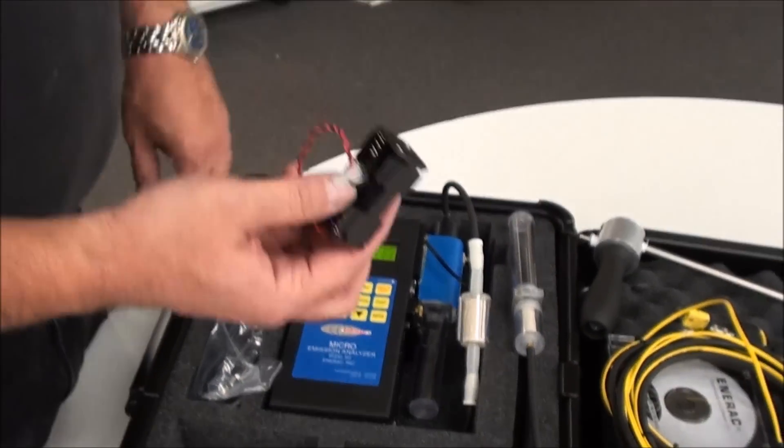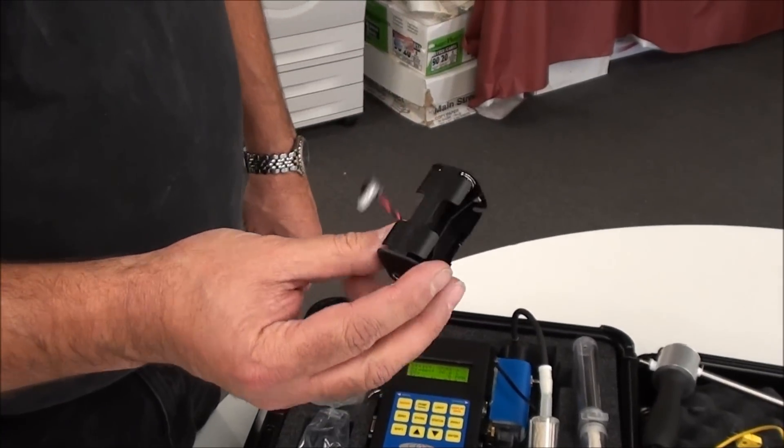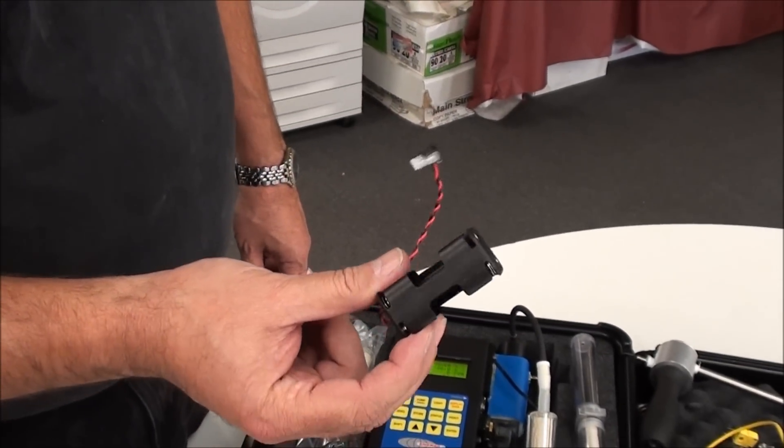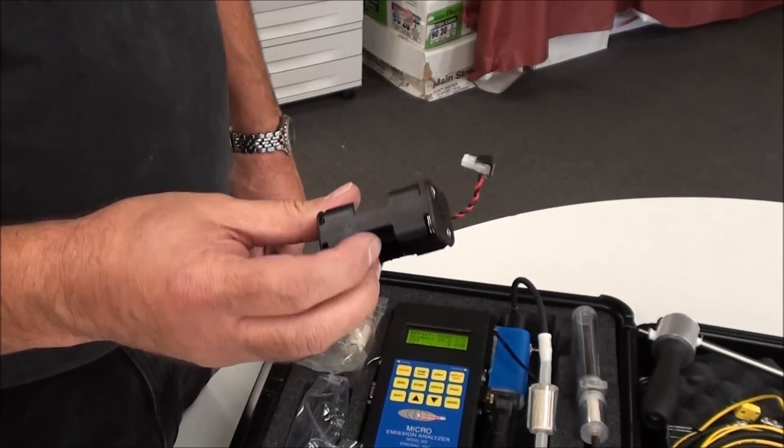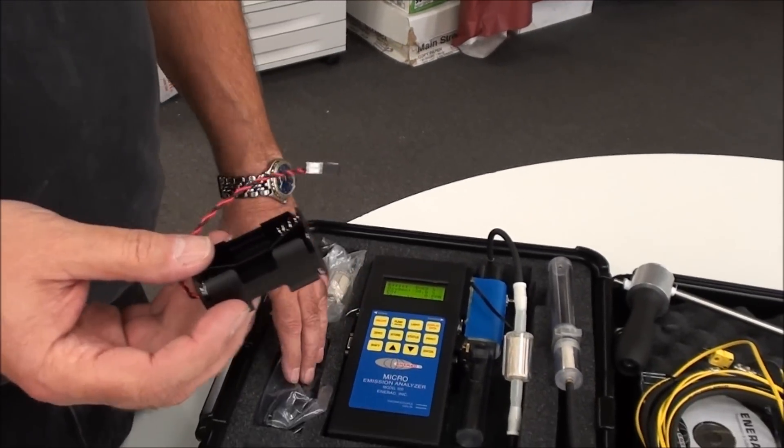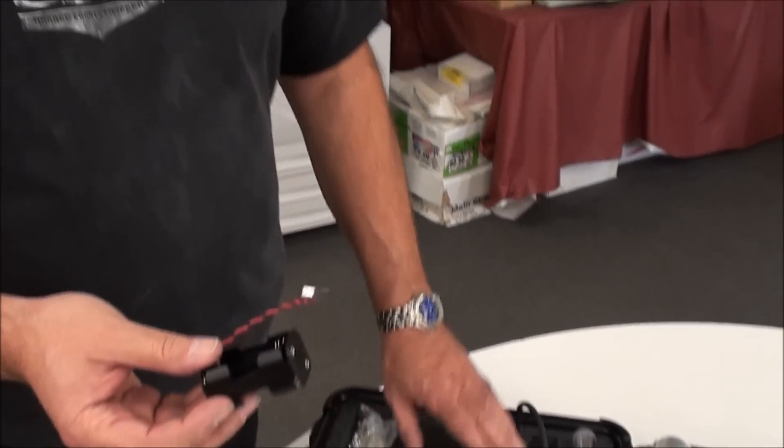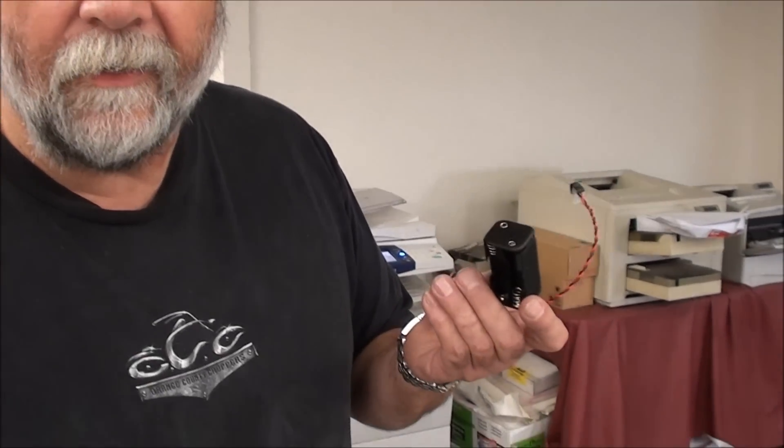You also get a 4-cell, 4AA-cell battery holder. In the event that you're in the field and you don't have power available to operate the unit on the rechargeable batteries, what you'll do is install four alkaline batteries into the holder, and you can continue your testing.